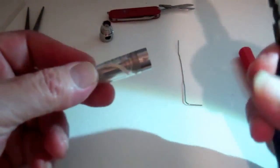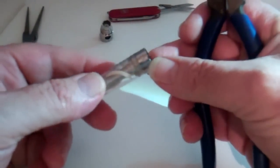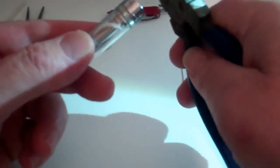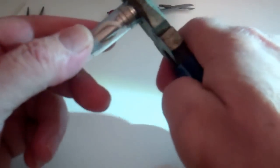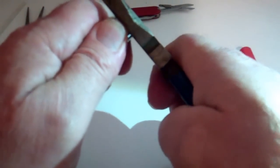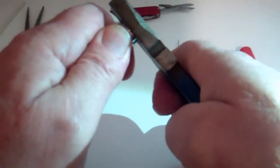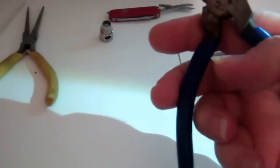First thing we want to do is we're going to take this retaining ring off with the pliers. We'll grasp it and wiggle it off very gently. Set that retaining ring aside.